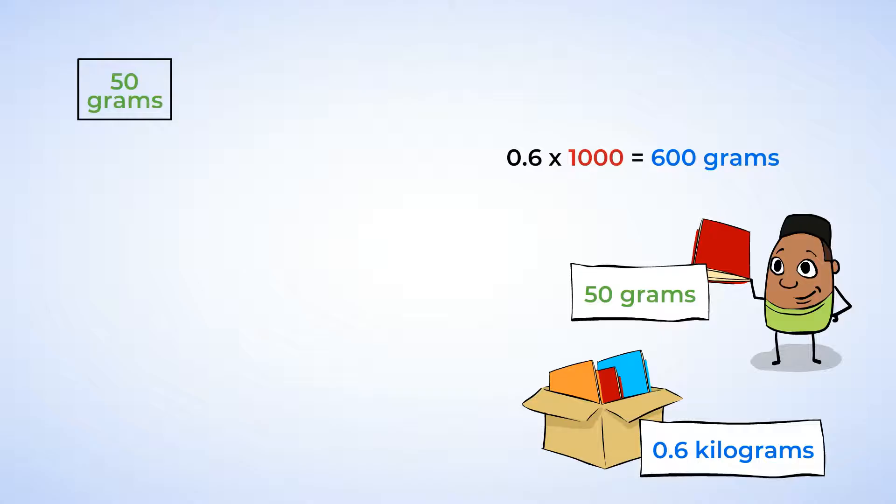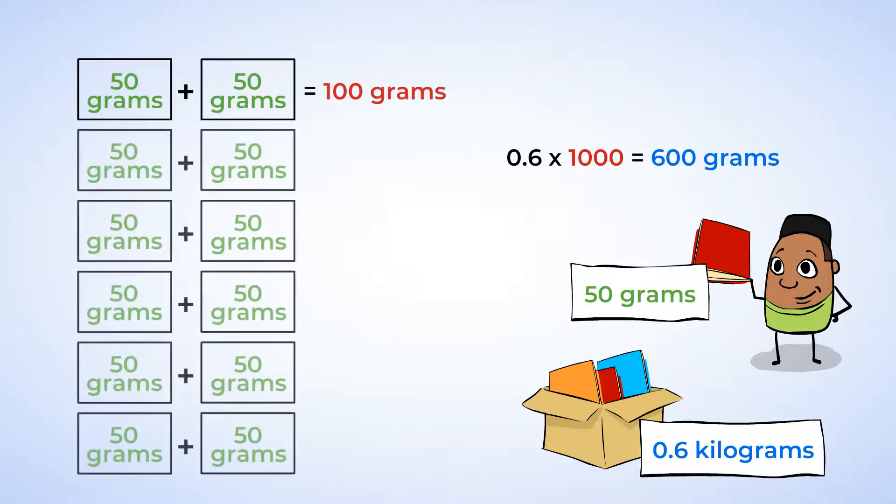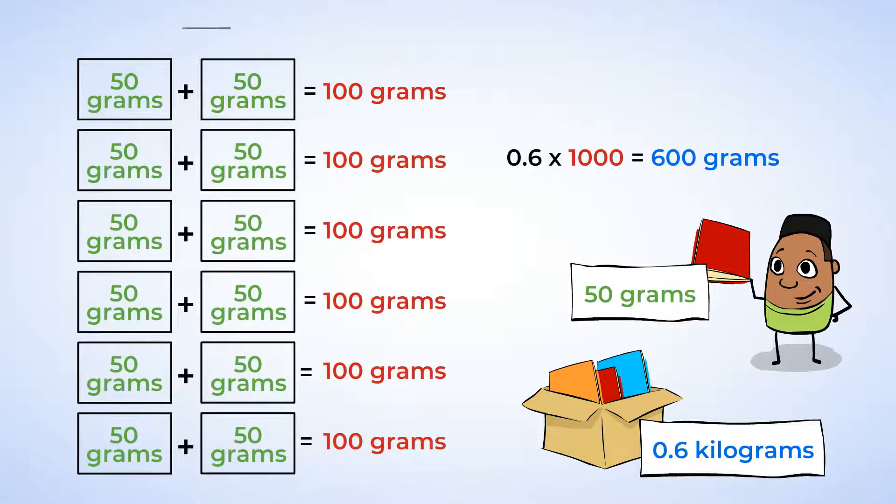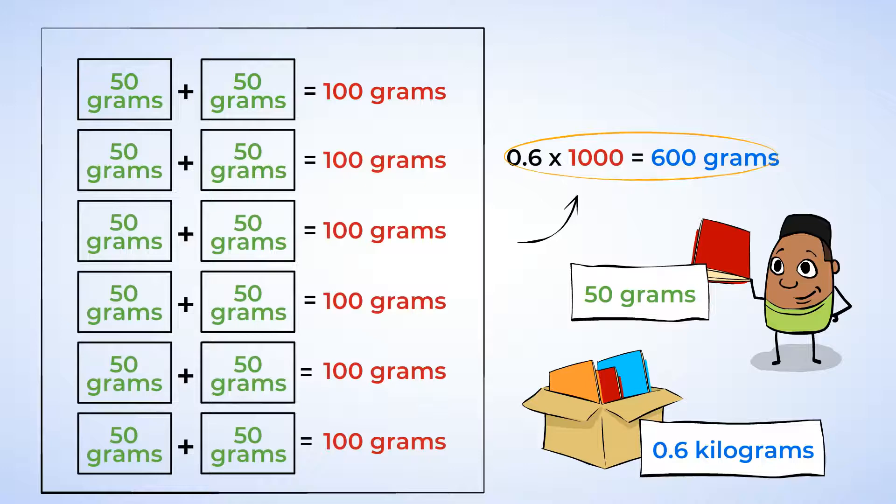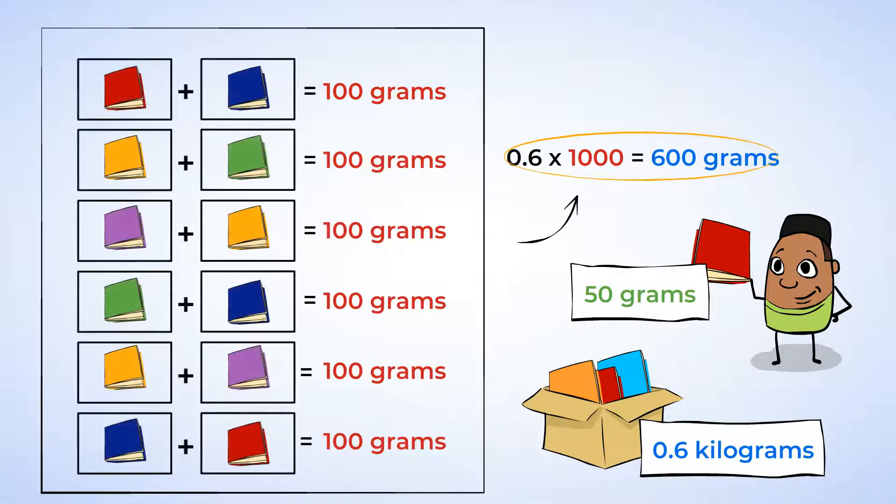Now, let's see. If one book is 50 grams, that means that two books will be 100 grams. So six groups of 100 is going to equal 600. And each of those groups we know has two books in it. So the box can hold 12 books. Perfect.